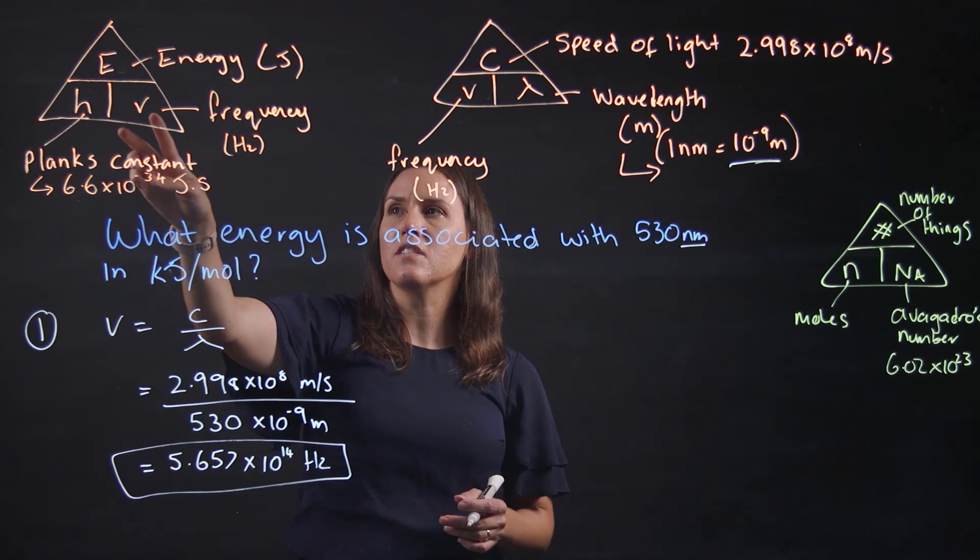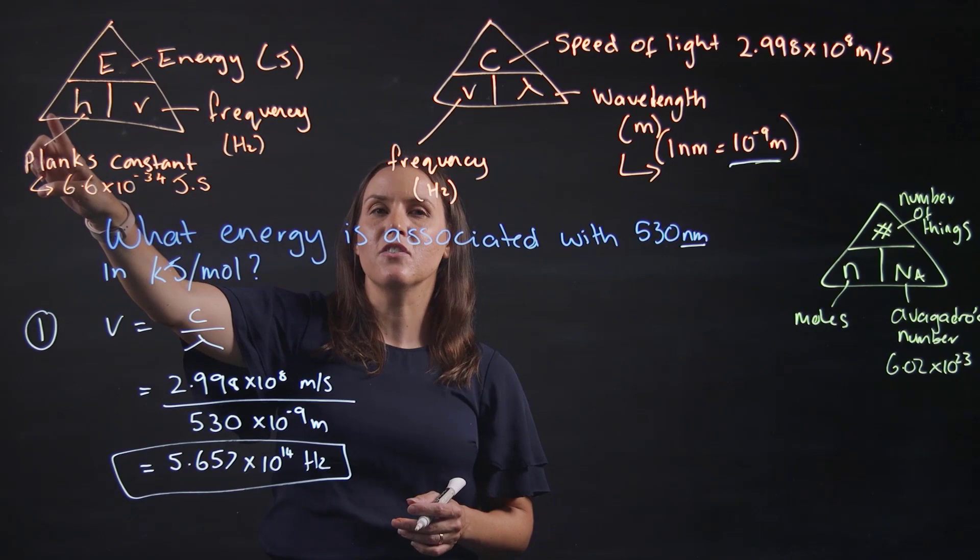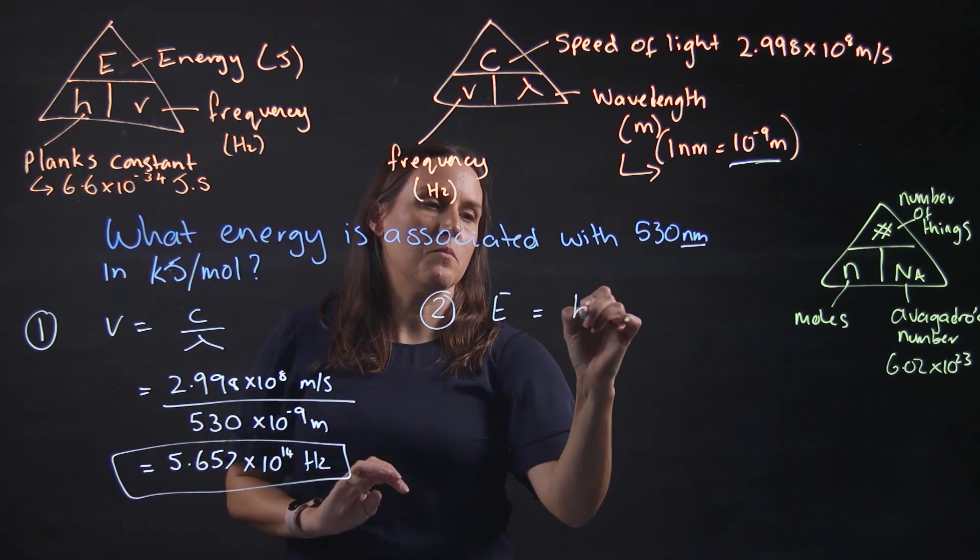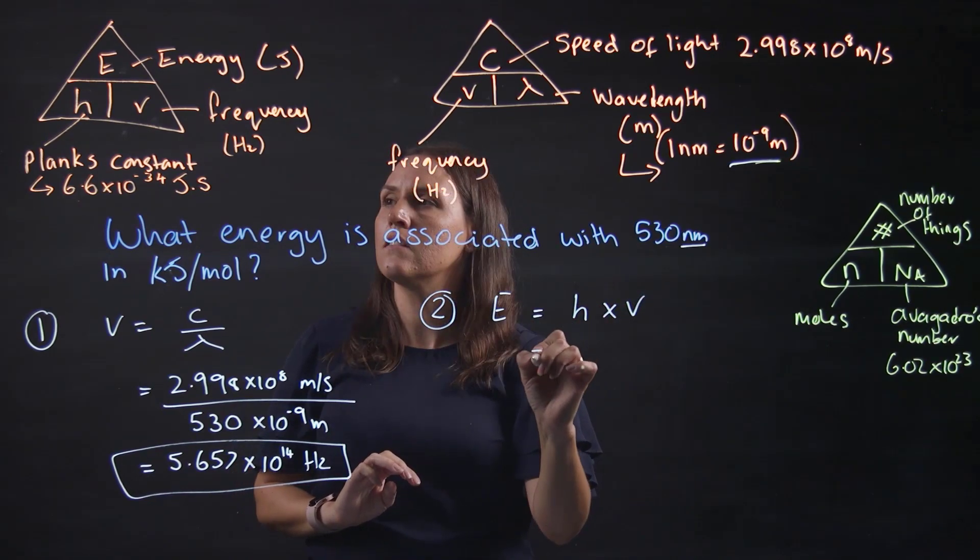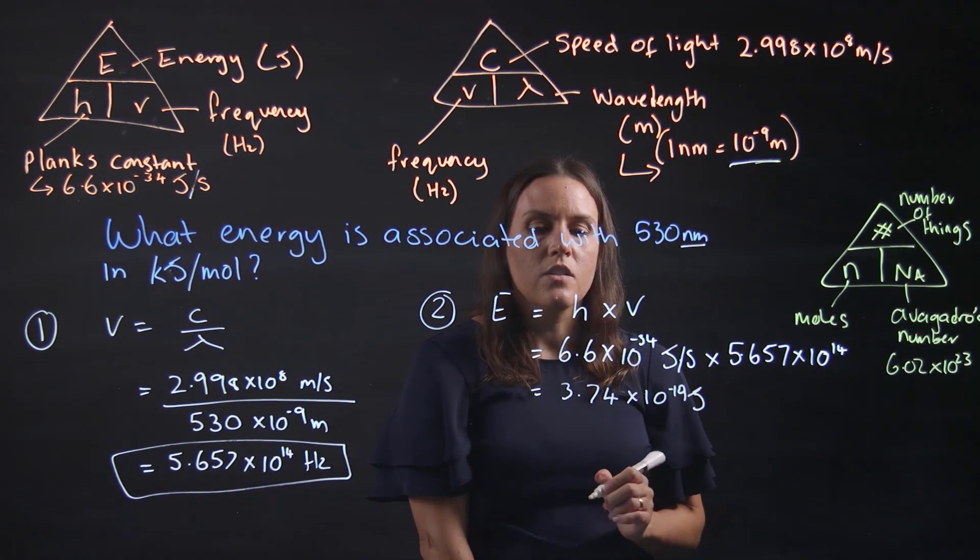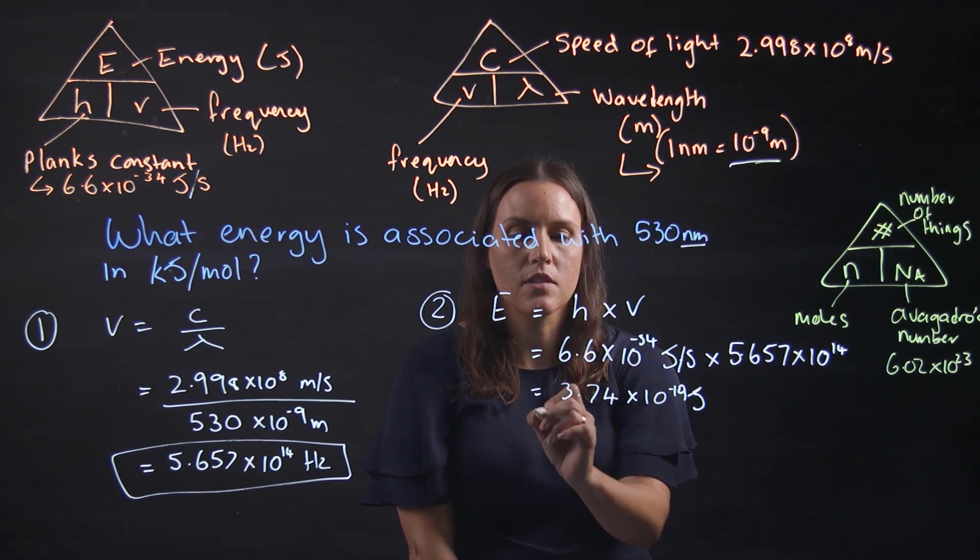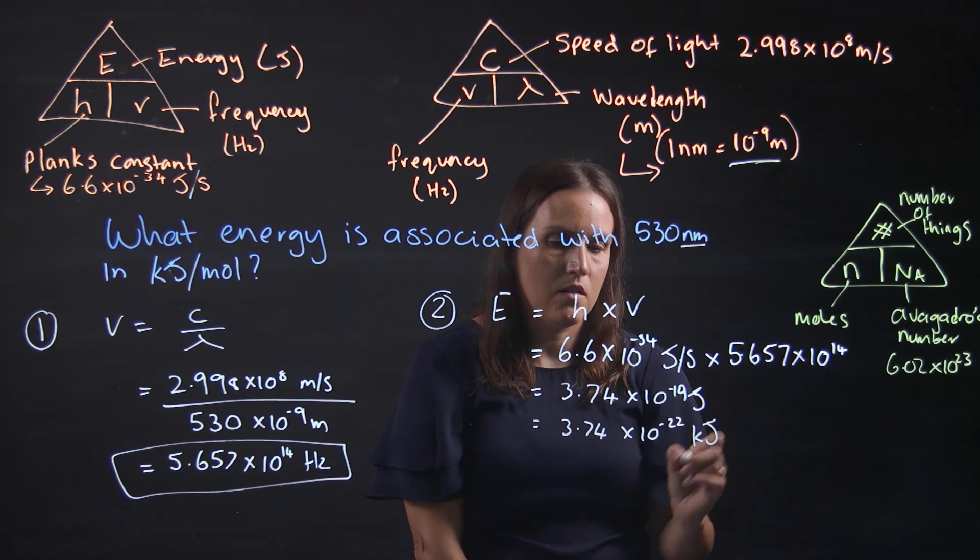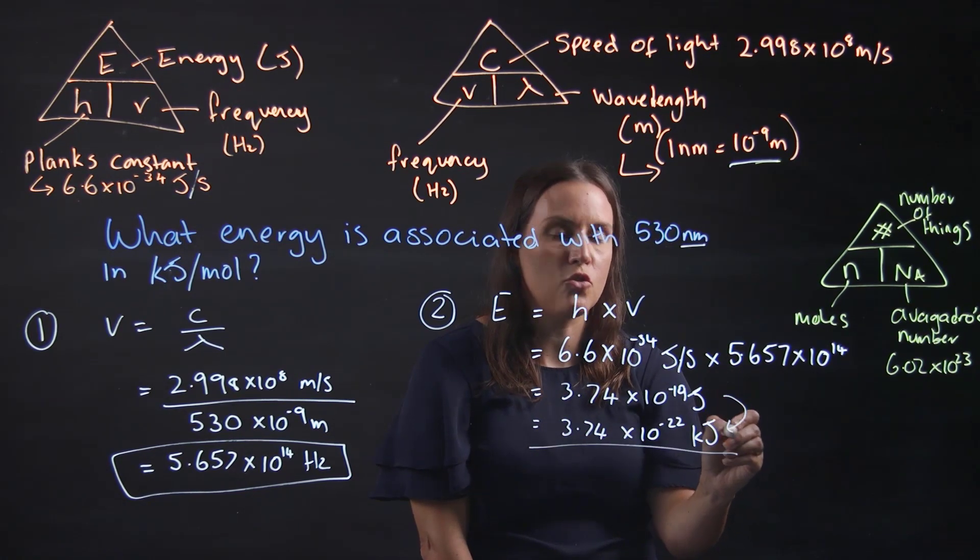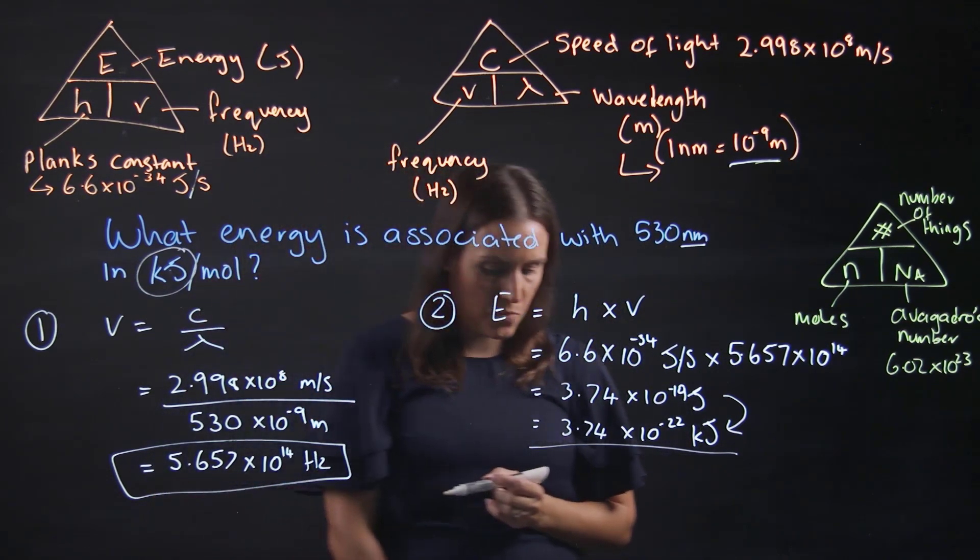Carrying it across to this next formula, we'll do the frequency multiplied by Planck's constant, which will give us the energy. I'll write it Planck's constant times the frequency. That equals 3.74 by 10 to the minus 14 joules, which equals 3.74 by 10 to the minus 22 kilojoules. Remember, converting joules into kilojoules because we want our answer in kilojoules per mole.